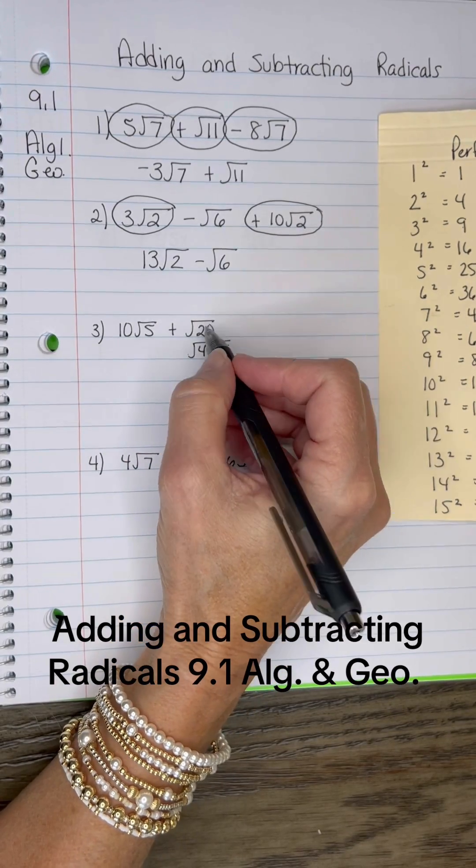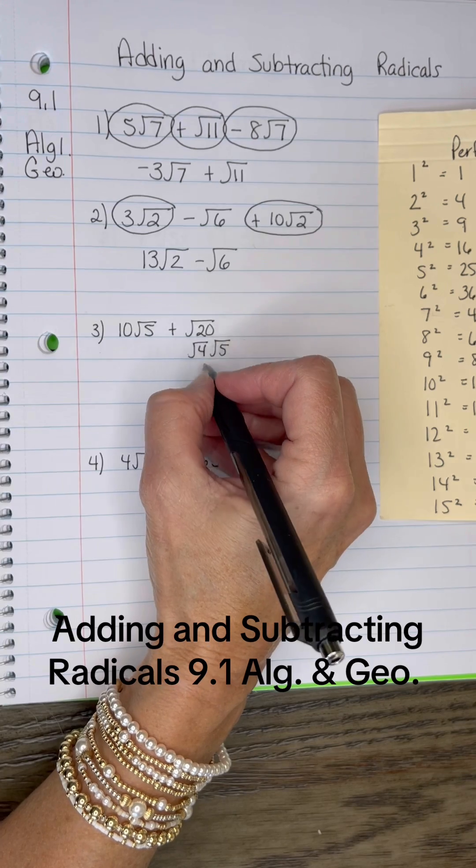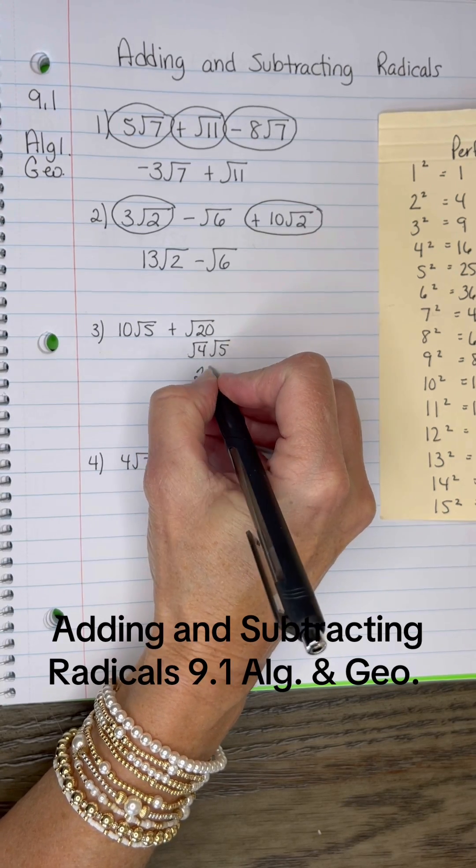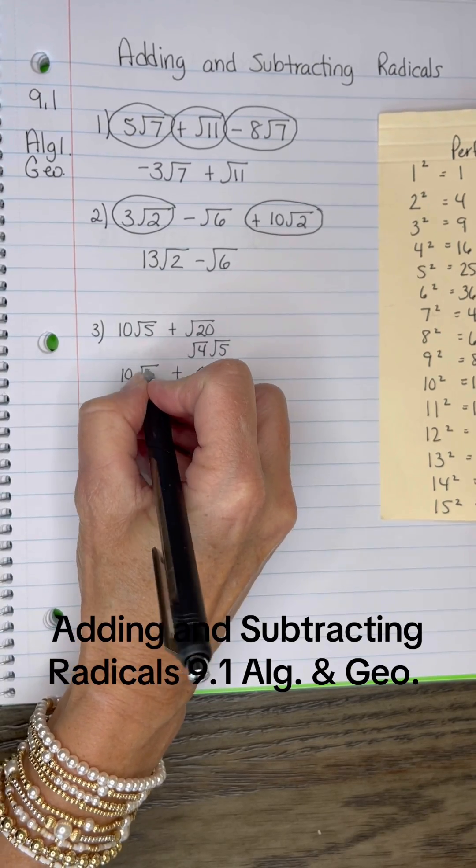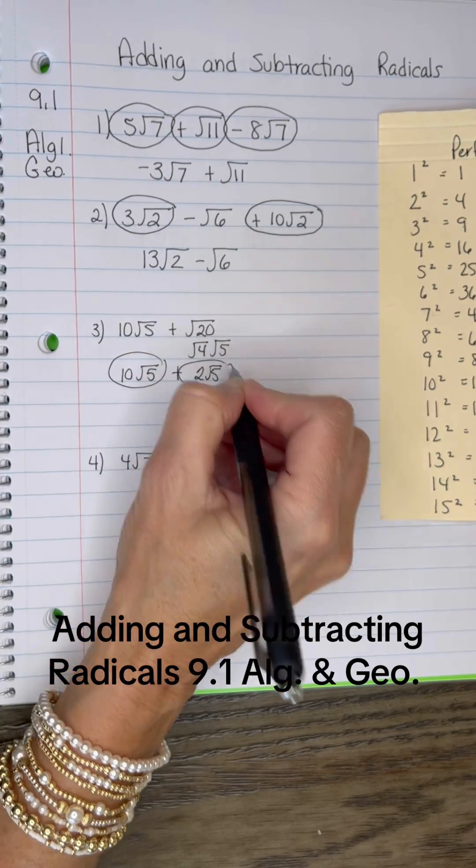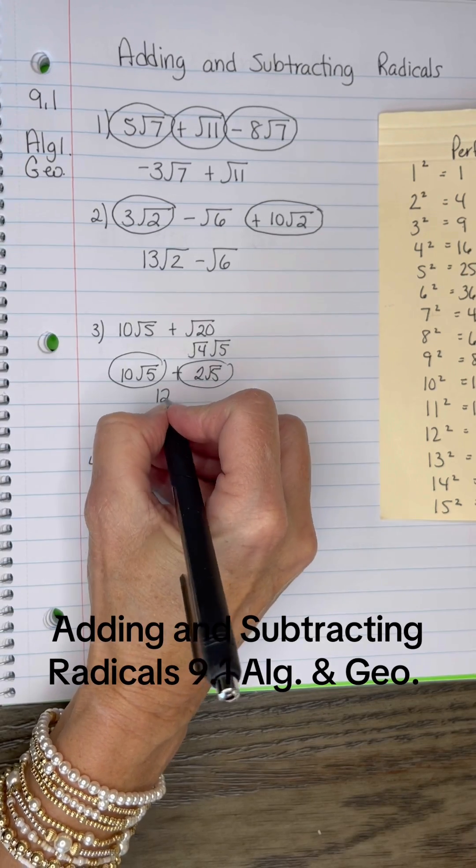Put the perfect root in front so you don't have to rewrite it. The square root of 4 is 2, so I have 2√5. That can be combined with the 10√5. So now, 10√5 plus 2√5 would be 12√5.